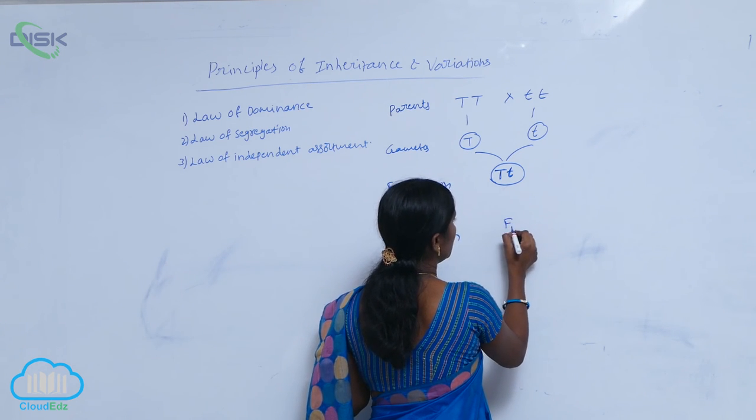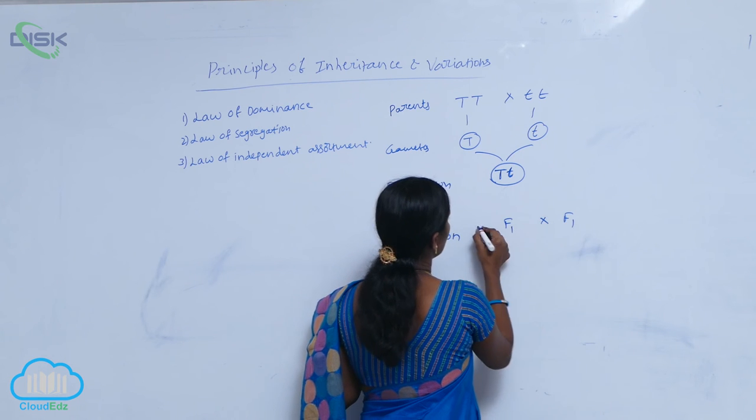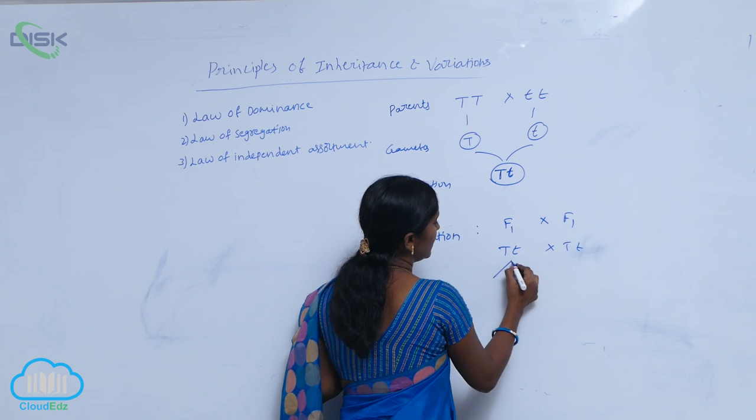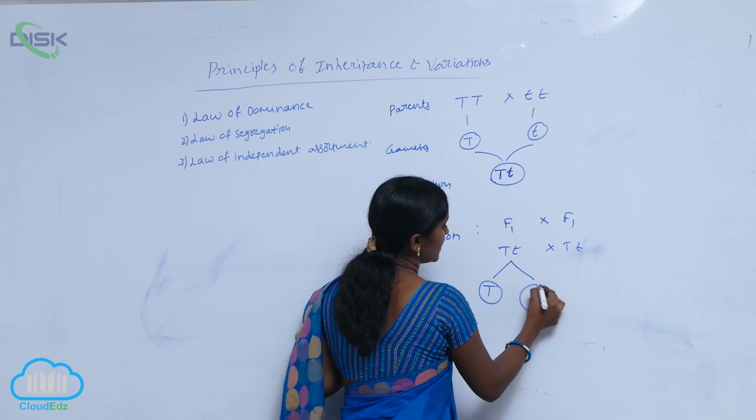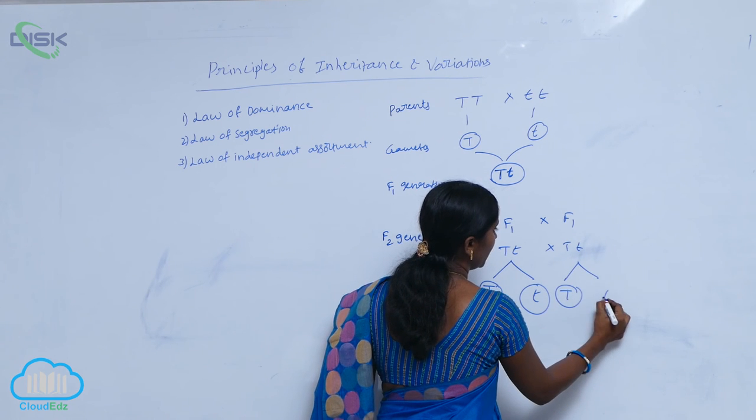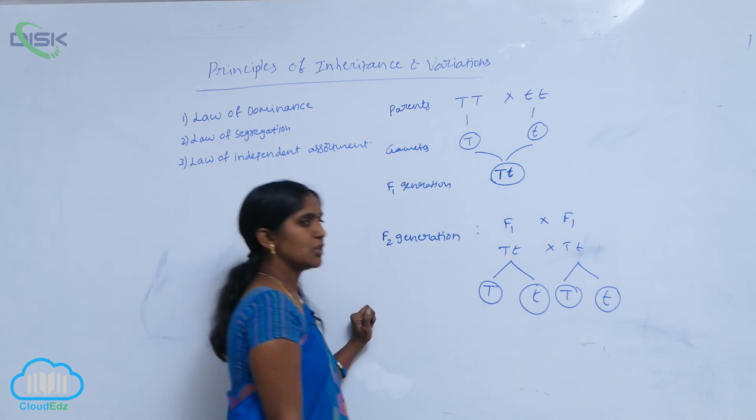How they segregate? You see here, the cross is made between the F1, F1. So, capital T, small t and capital T, small t. Here, the gametes are segregated as separate. It means here, the purity is maintained. How the purity is maintained?